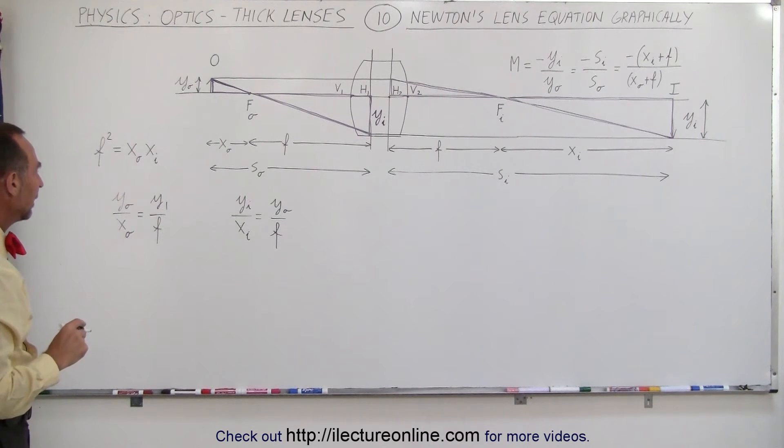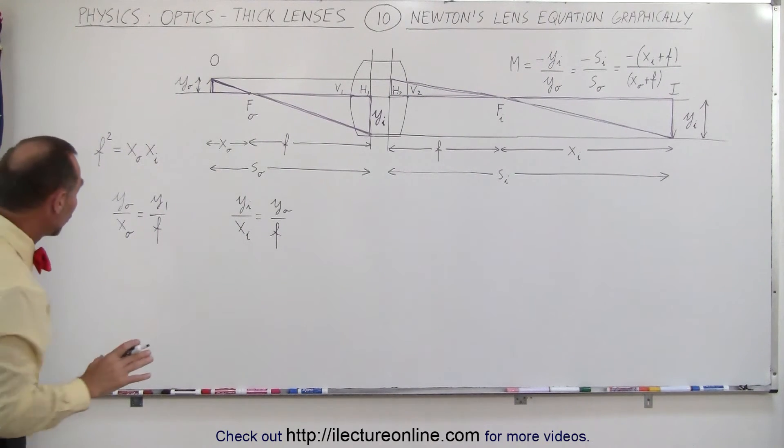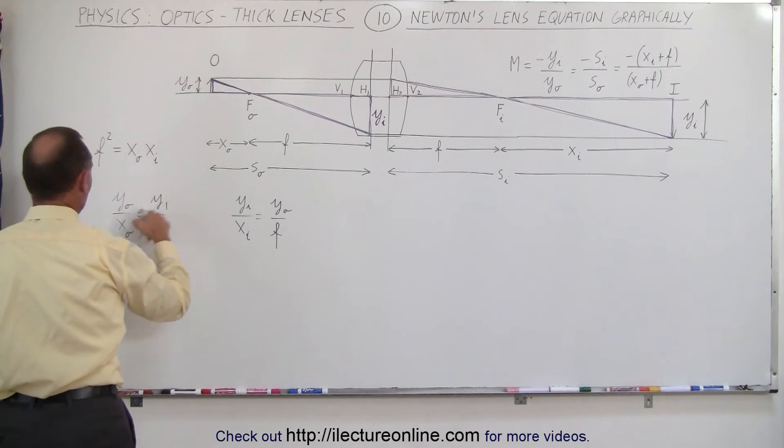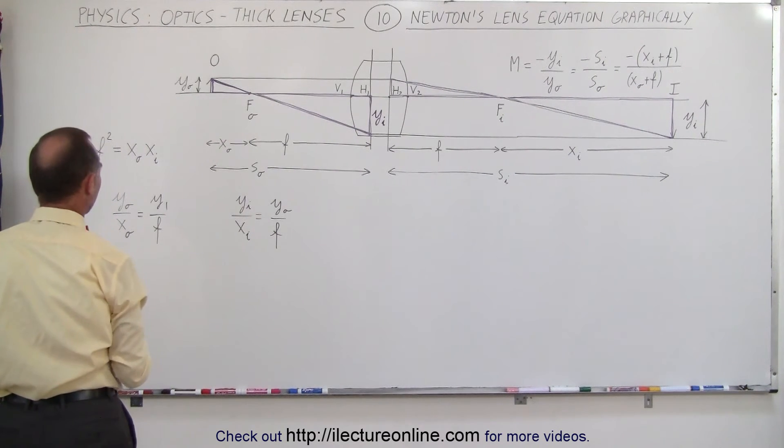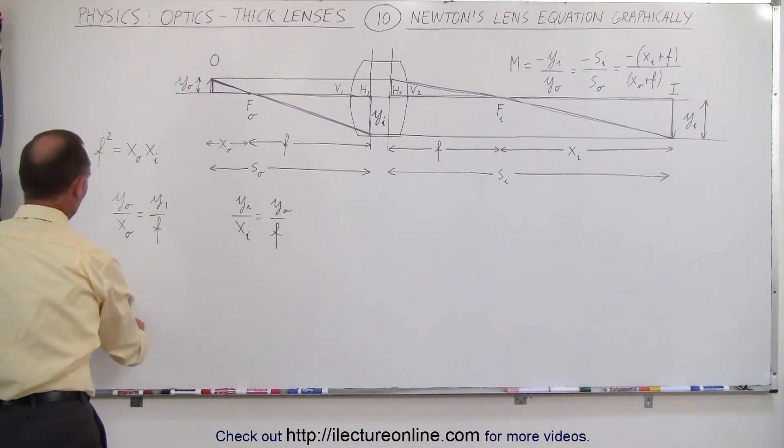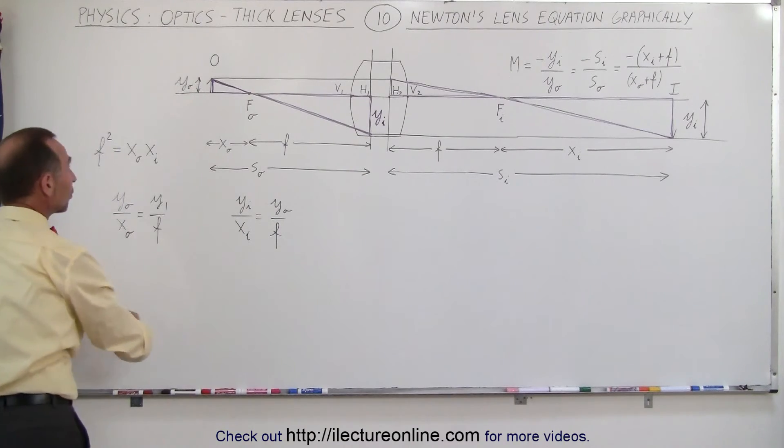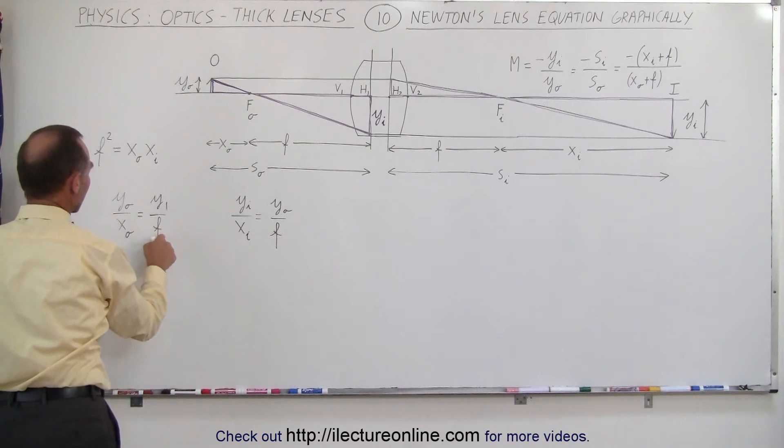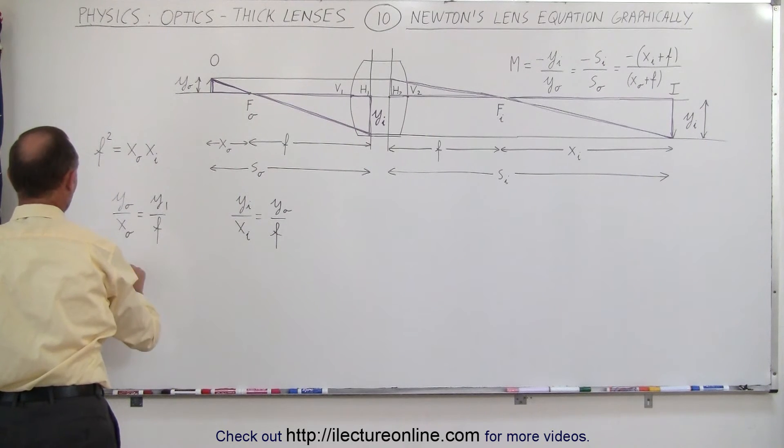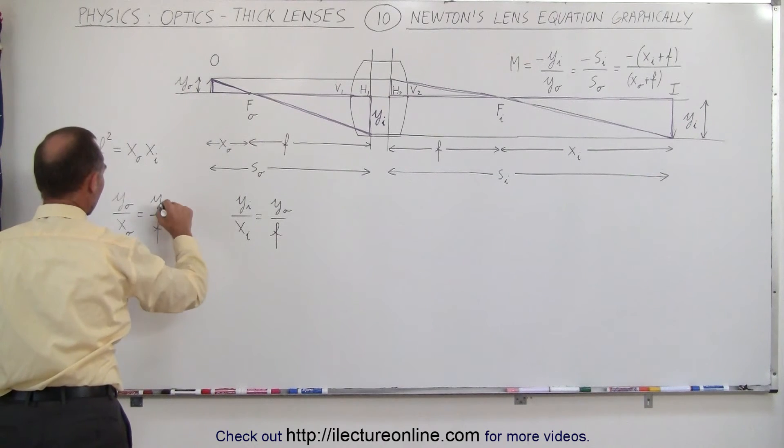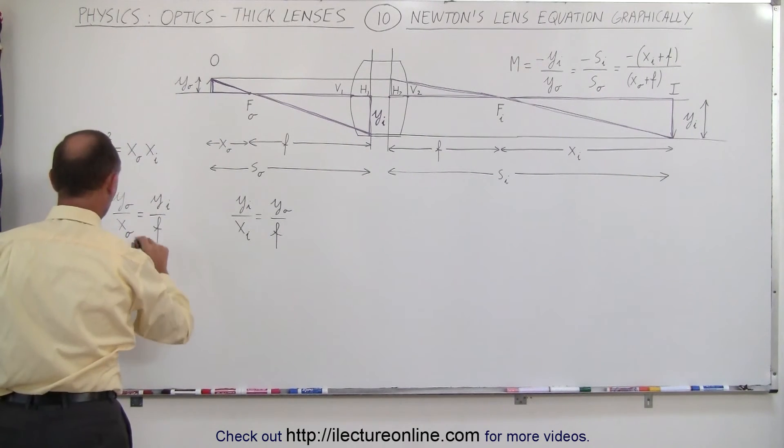Okay, what we should do now is find the ratios of y sub i to y sub O. Actually, I'm going to reverse that because we always like to write the magnification in terms of the image height over the object height. So I'll bring this down here, bring this up here, and we can say that f divided by x sub O is equal to y sub i divided by y sub O.